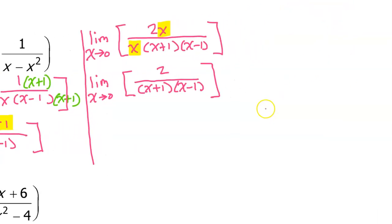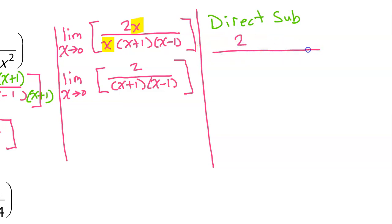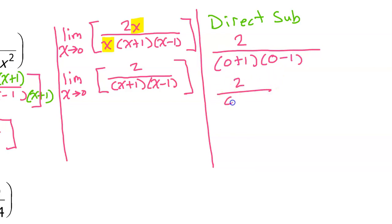At this point we are ready for direct substitution. Letting x equal zero, we get 2 over (0+1)(0-1), which is 2 over 1 times negative 1, which equals negative 2. So that is your limit.